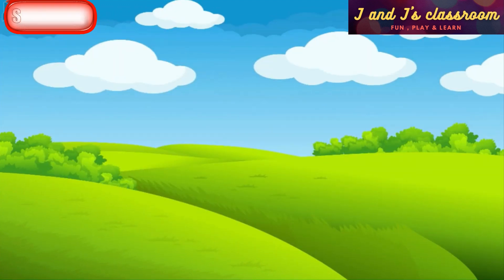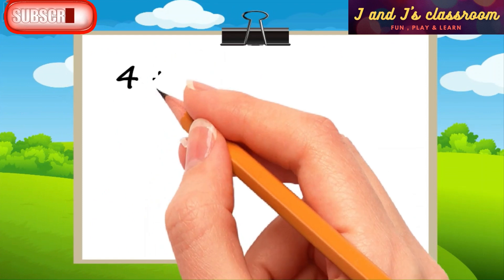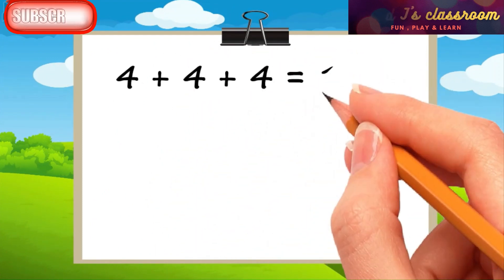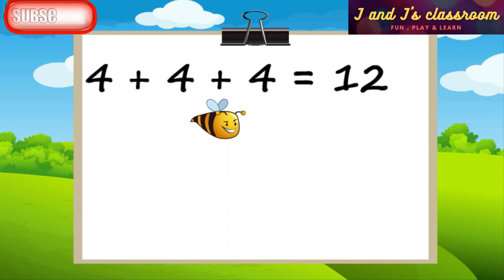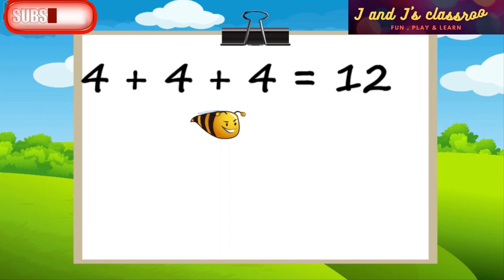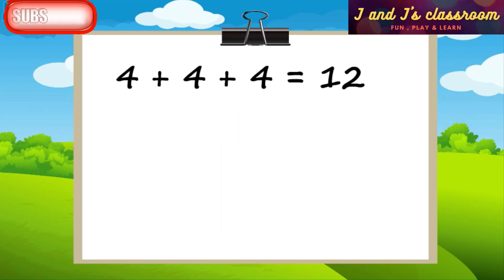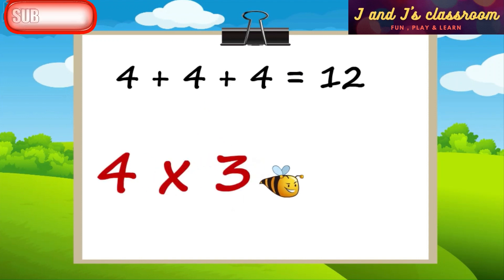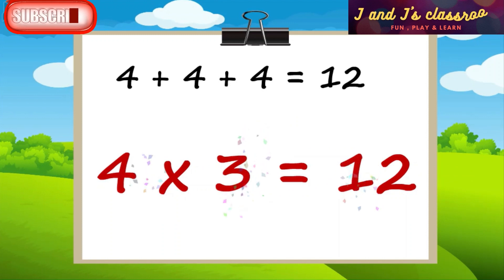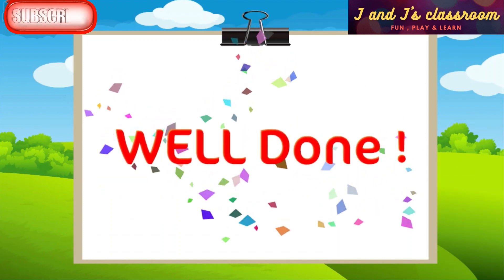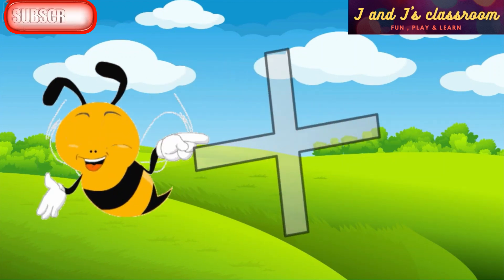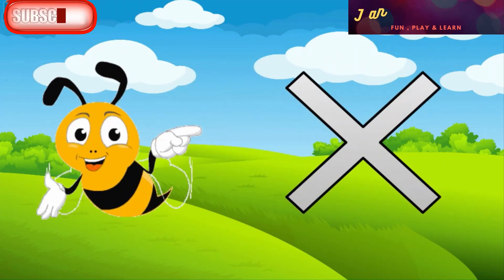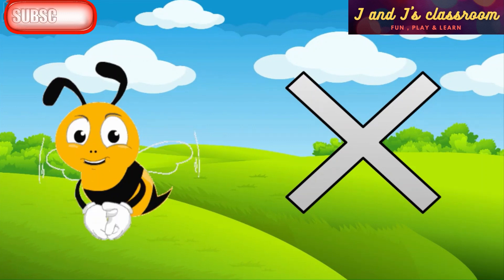Now take a paper and write like this: 4 plus 4 plus 4 is equal to 12. Now write this repeated addition in a multiplication format. Here 4 is repeatedly added 3 times, so write 4 cross 3 is equal to 12. Well done! Did you notice the cross symbol? That is the sign of multiplication.